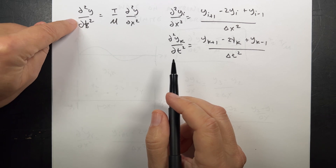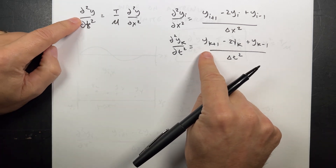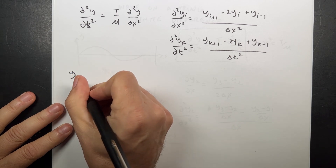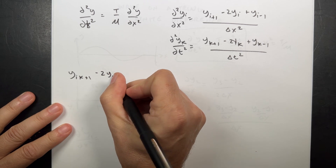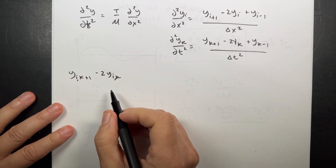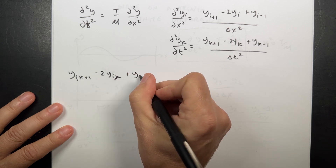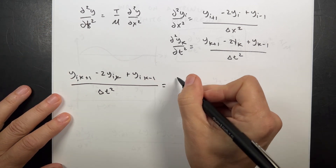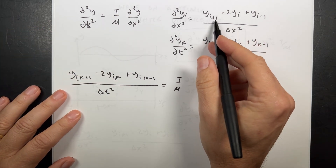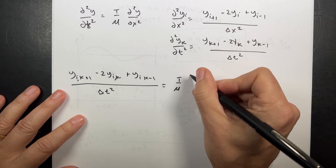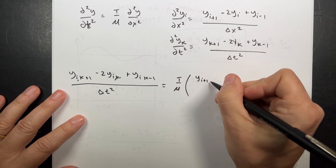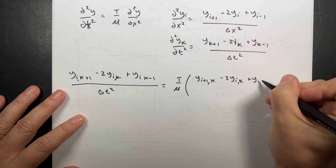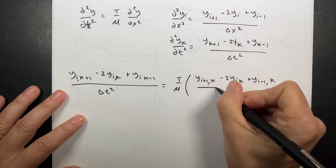Let's combine these two together, give both indices, and put this into the wave equation. Including the i index, I have: (y_i,k+1 minus 2y_i,k plus y_i,k-1) over delta t squared equals T over mu times (y_i+1,k minus 2y_i,k plus y_i-1,k) over delta x squared.